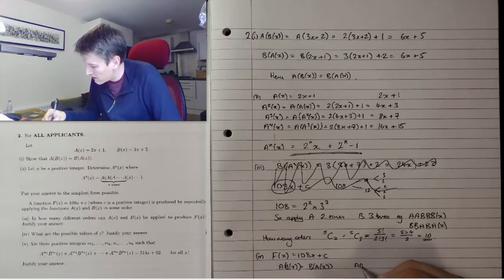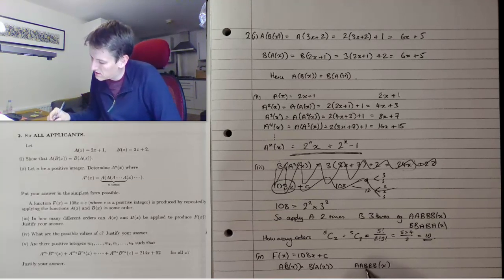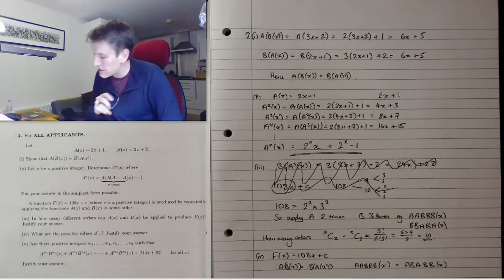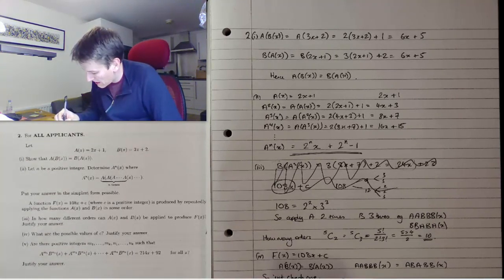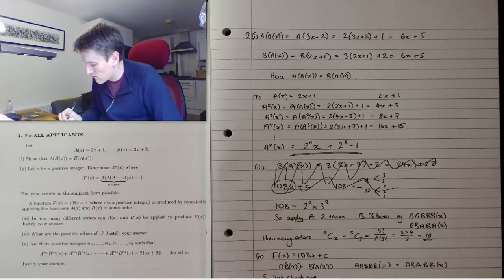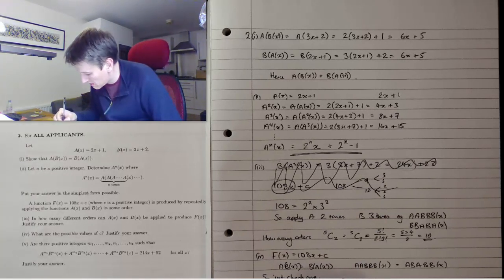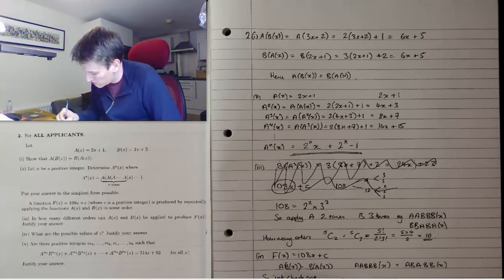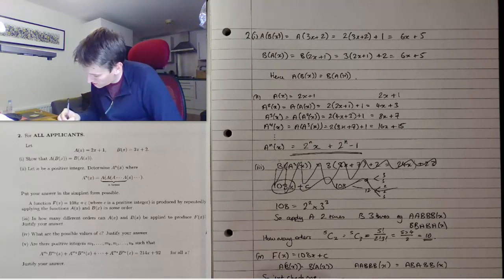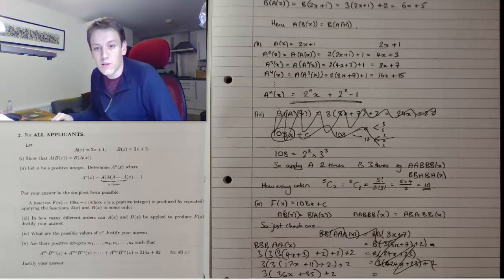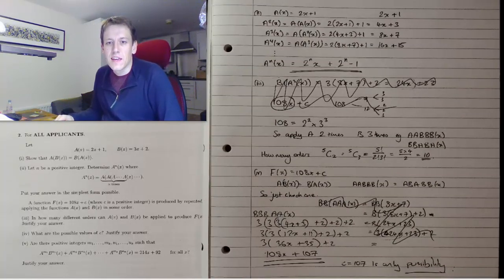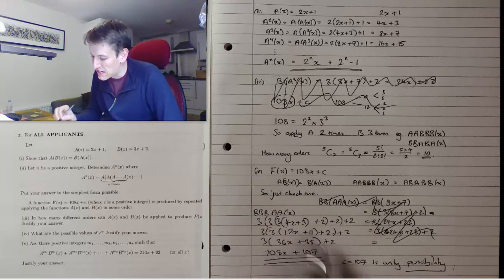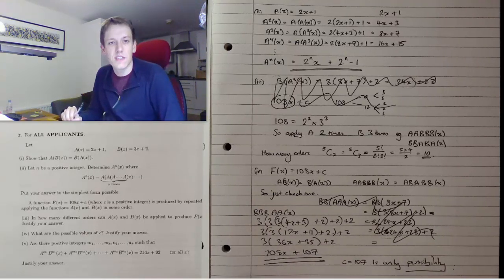What that means is if I switch the order of an a and a b, they're the same. So I'm going to apply b three times to a(a(x)). a(a(x)) was 4x+3. So I want to do 4x+3, then apply b to that which is 3 times that plus 2. Apply b again, so 3 times that plus 2, and apply b again, 3 times that plus 2. Working through all the different functions, c = 107 is the only possibility.